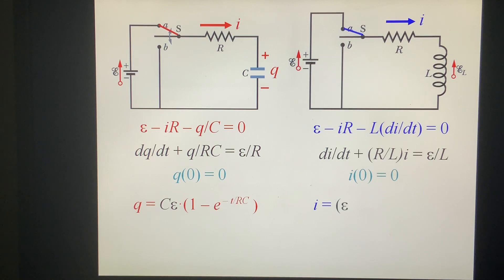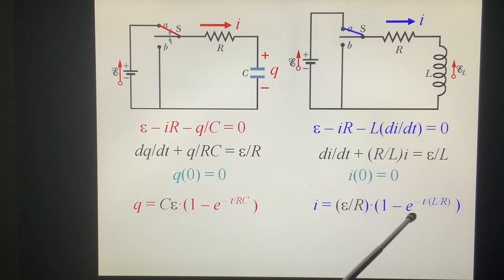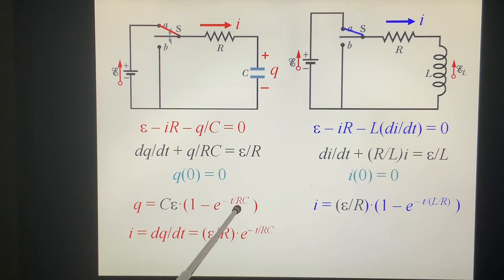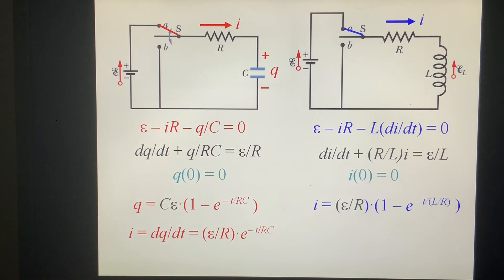Now we look at the R-L case. We have I equal to (epsilon/R)(1 minus e to the minus TR/L). We can rewrite this as T over (L/R). Taking the derivative with respect to time T, we get the current. When T equals 0, this is epsilon/R — very large. When T approaches infinity, I reduces to 0. This is the situation for the capacitor.